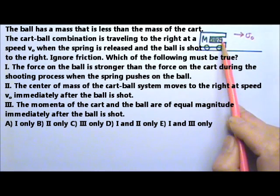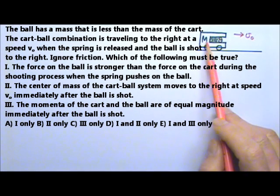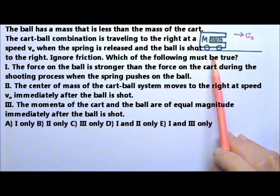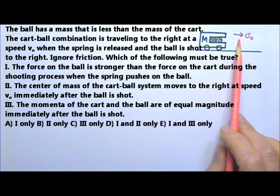1. The force on the ball is stronger than the force on the cart during the shooting process when the spring pushes on the ball. 2. The center of mass of the cart-ball system moves to the right at the speed v₀ immediately after the ball is shot.